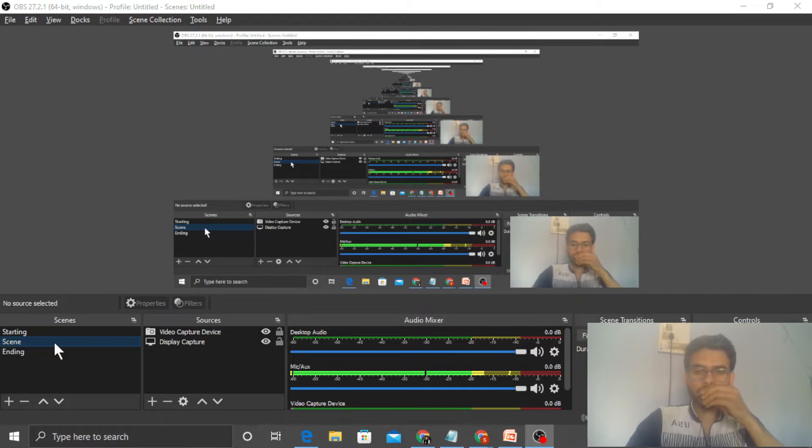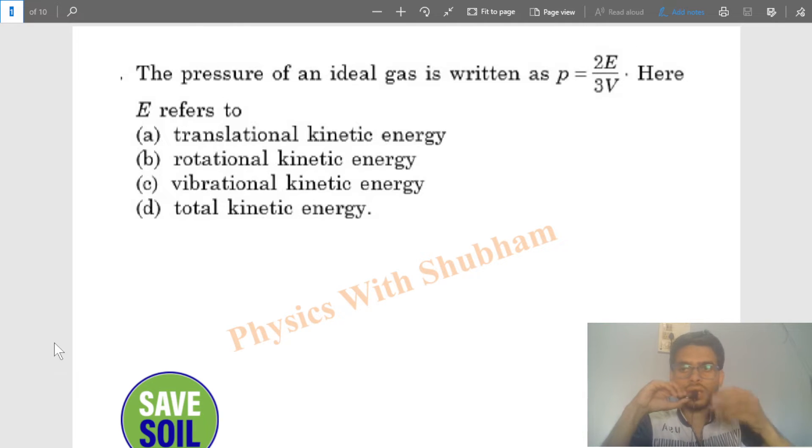Hi everyone, today let's discuss one interesting problem. It says the pressure of an ideal gas is written as this equation given here. E refers to... okay, so here we find out E will be 3